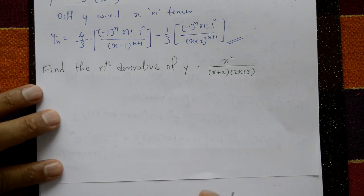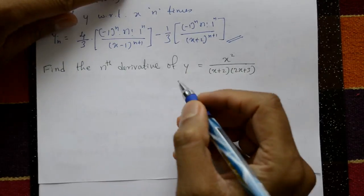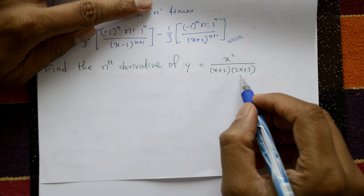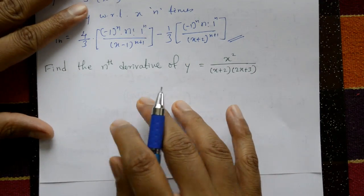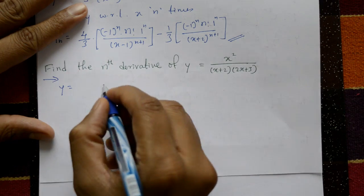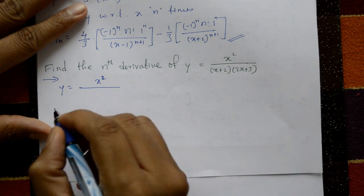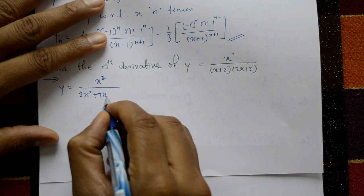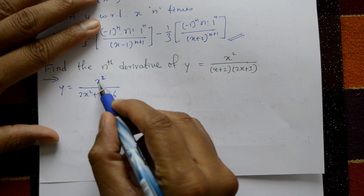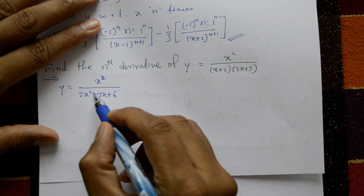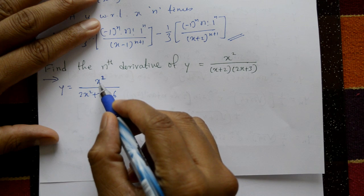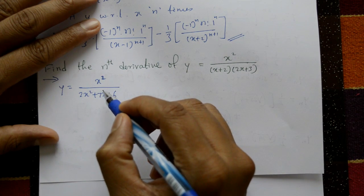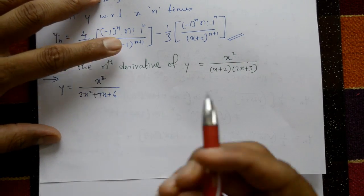Find the nth derivative of y = x² / [(x+2)(2x+3)]. Given y = x² / (2x²+7x+6). Here the numerator degree is 2 and denominator degree is also 2, so numerator degree is greater than or equal to denominator degree — this is an improper fraction. Convert improper to proper fraction.